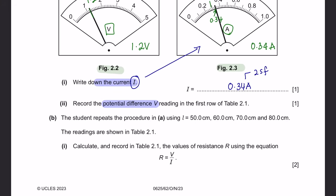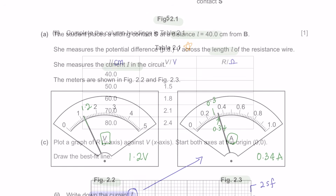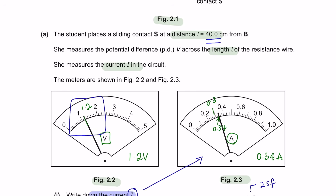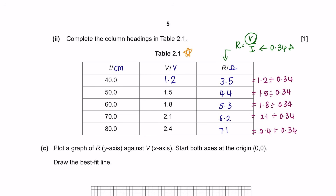Part 2: Record the potential difference V reading in the first row of table 2.1. For question B, the student repeats the procedure using L equals 50, 60, 70, and 80 centimeters. Part 1: calculate and record the resistance R using R = V/I. Length is in centimeters, potential difference in volts, resistance in ohms. The voltmeter reading for 40 centimeters is 1.2 V. The current I is fixed at 0.34 amperes. Substitute into the formula to get the resistance values. Since voltage is given to one decimal place, leave resistance to one decimal place too.